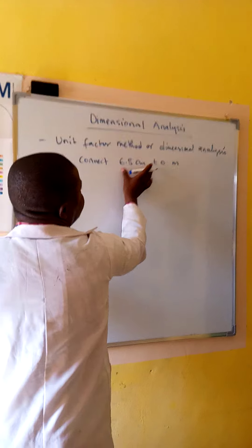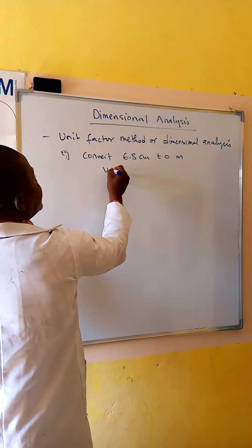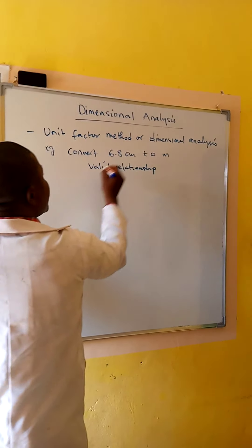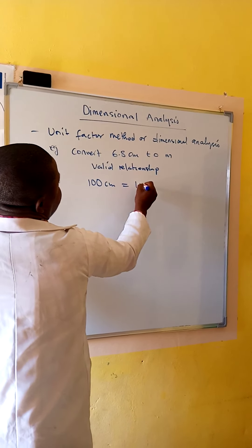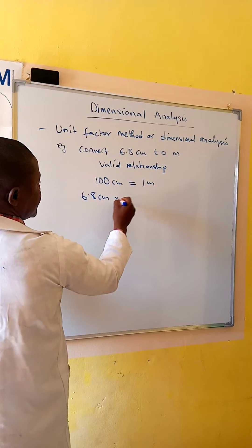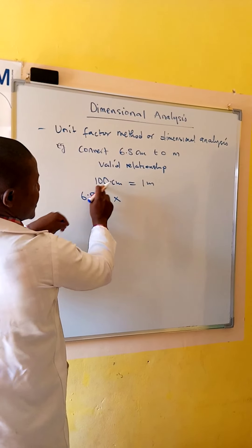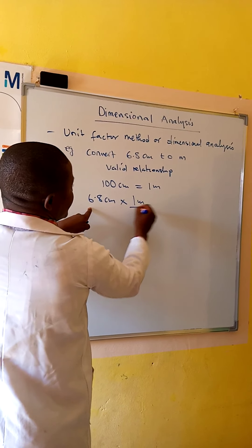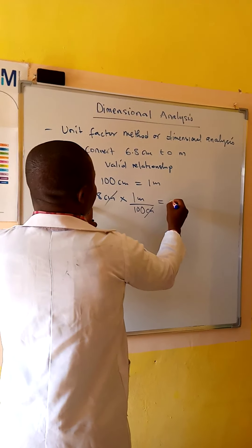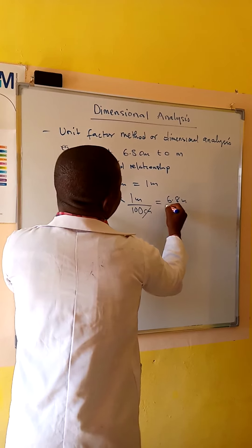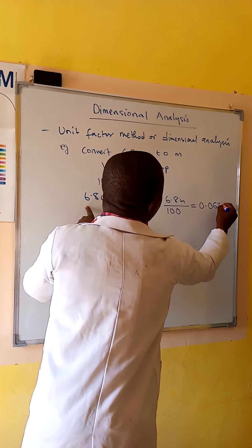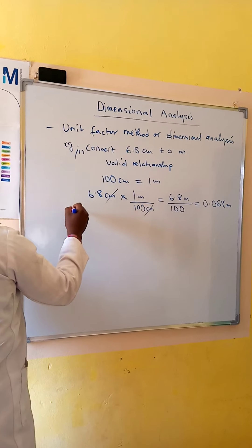What is the valid relationship that exists between centimeters and meters? We know that 100 centimeters is equal to 1 meter. Then we have 6.8 centimeters times — we want the centimeter to cancel, so this factor must come down. We have 1 meter over 100 centimeters, so the centimeter cancels. Then we have 6.8 meters over 100, which is equal to 0.068 meters.